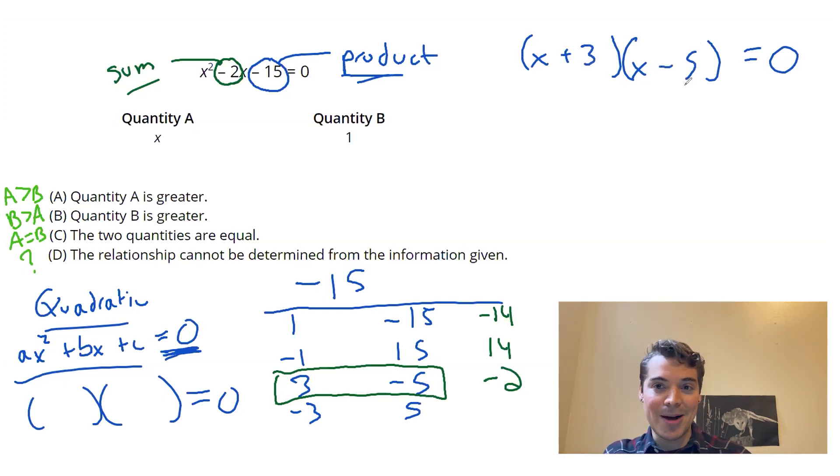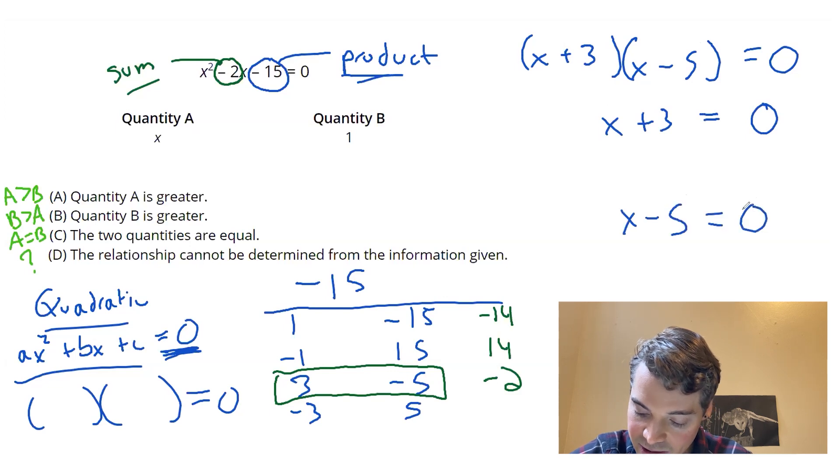From here, remember what the zero product property tells us, right? Either that or that must be zero to get a product of zero. So my two potential cases are either x plus three equals zero, or x minus five equals zero. And if I solve those out, I can see either x is negative three, or x is positive five.